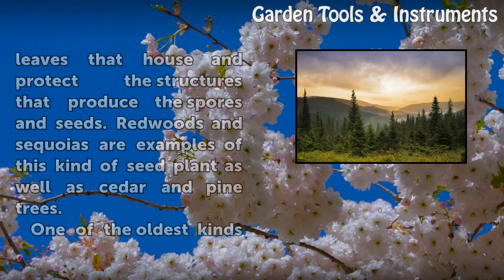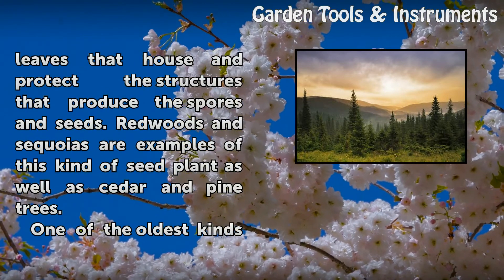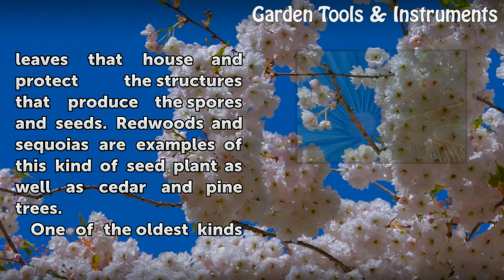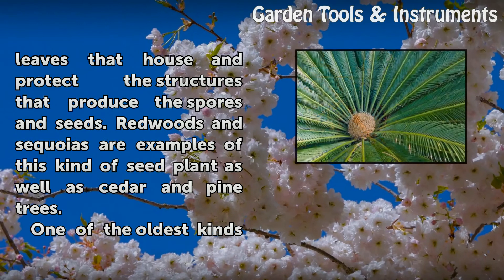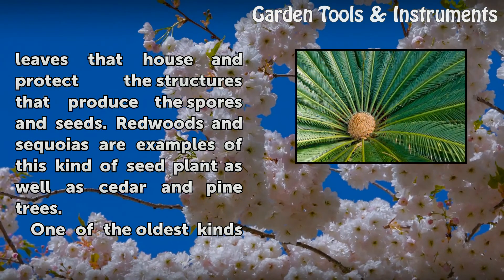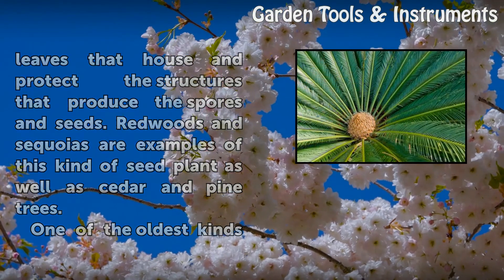The cones on these plants are modified leaves that house and protect the structures that produce the spores and seeds. Redwoods and sequoias are examples of this kind of seed plant, as well as cedar and pine trees.